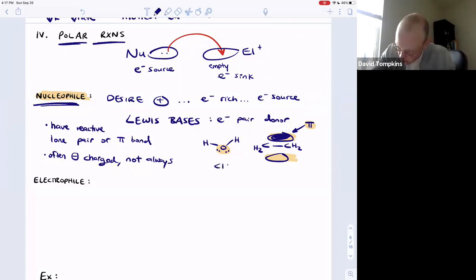Another example which we'll see in a minute would be an anion like chloride with a bunch of lone pairs. Any one of those lone pairs could be nucleophilic.